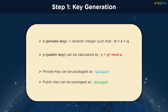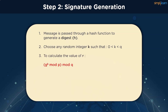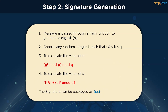Once the keys are generated, we can start generating the signature. The message is passed through a hash function to generate the digest H first. We can choose any random integer K which falls between 0 and Q. To calculate the first 160-bit number R of the signing function, we use the formula G to the power K mod P, then mod Q. Similarly, to calculate the value of the second output S, we use the formula shown on the screen. The signature can then be packaged as a bundle having R and S, which along with the plain text message is passed on to the receiver.